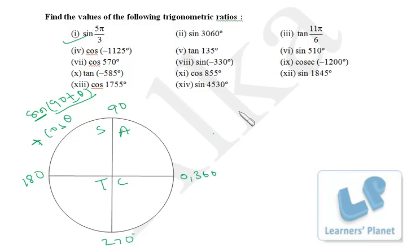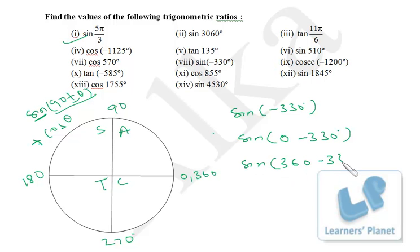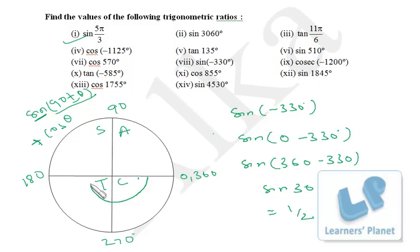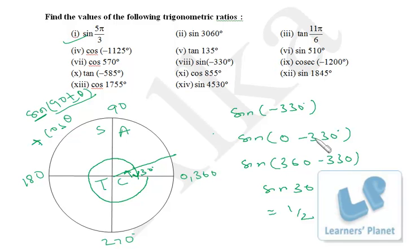Now let's calculate sin(−330°). It is sin(0 − 330), or equivalently sin(360 − 330) = sin 30°. 0 and 360 are the same point. Sine 30° is 1/2. So sin(−330°) is 1/2. A negative angle means a clockwise move: −330° and +30° both reach the same position. So sin(−330°) = sin 30° = 1/2.